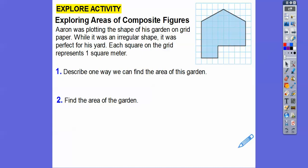So Aaron was plotting the shape of his garden on a grid paper. While it was irregular shape, it was perfect for his garden. Code word, word problem you guys right here. So each square of the grid represents one square meter. So describe one way of finding the area. There's several, several correct ways. I'm only going to show you two or three of them right here. But there's others also.